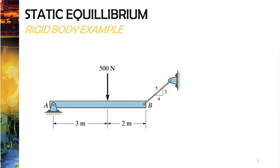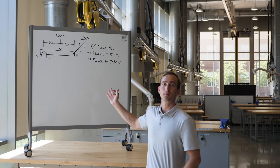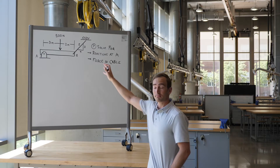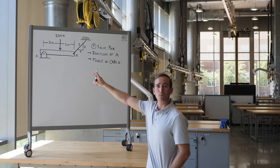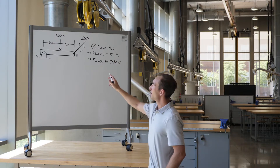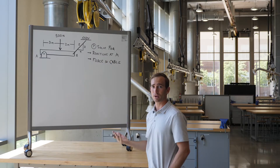To get things started, we'll look at the following example problem, which shows a beam supported by a pin at A and a cable at B. We'll go through how to set up a free body diagram and the system of equations to solve this problem. We've got a beam attached with a pin support at point A and a cable at point B up to the roof. The cable is inclined at an angle given by a 3-4-5 similar triangle.